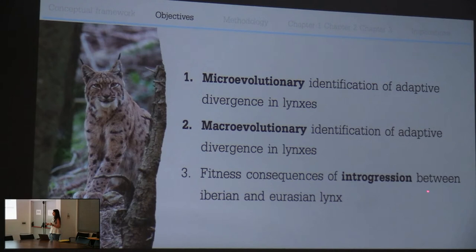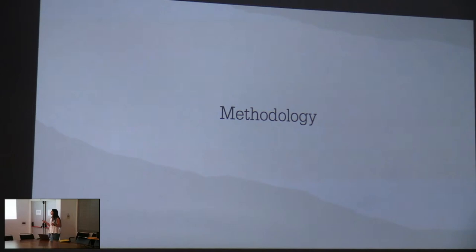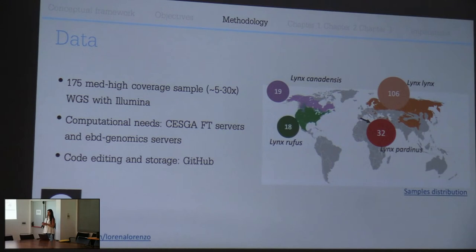For the methodology, the data we have for this study is 175 mid-to-high coverage whole genome sequence samples sequenced with Illumina technologies. The computational resources used are the CESGA servers, Finisterra servers, and IBD genomic servers. My code editing and storage is in GitHub - don't judge my code, I'm learning.